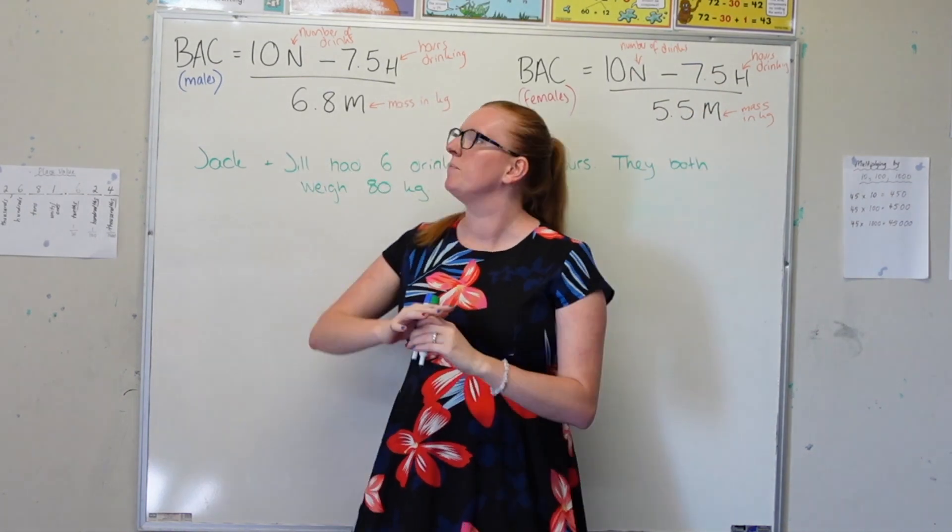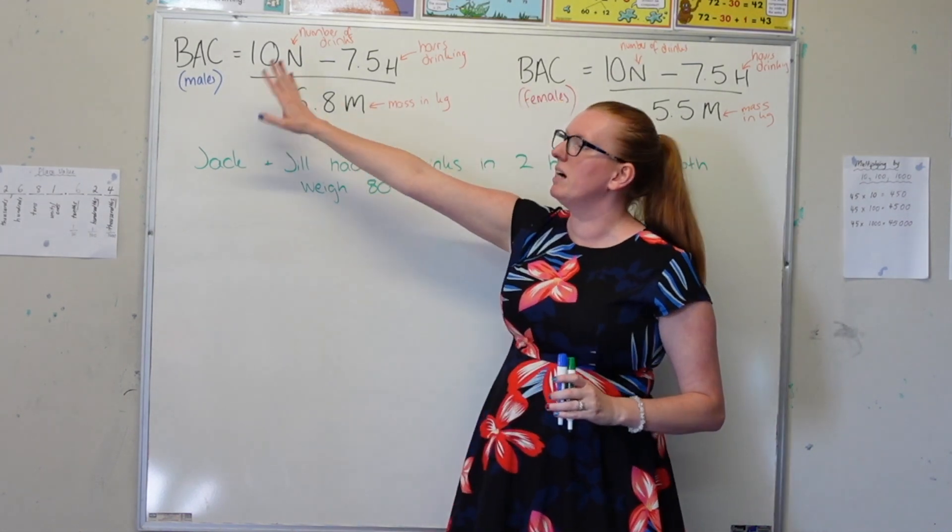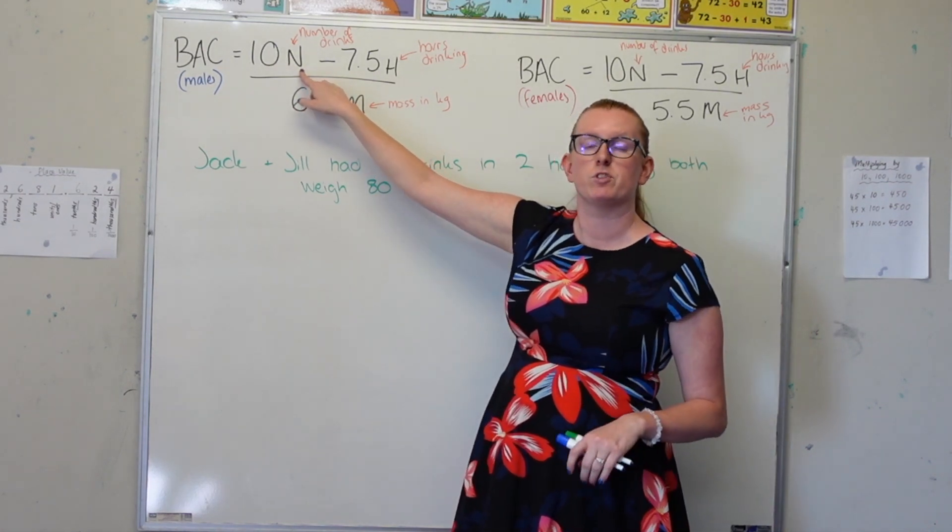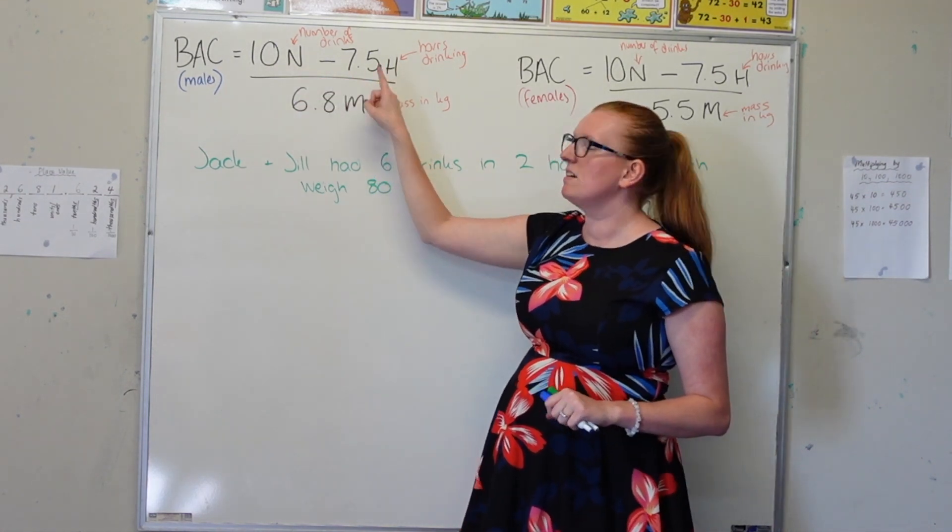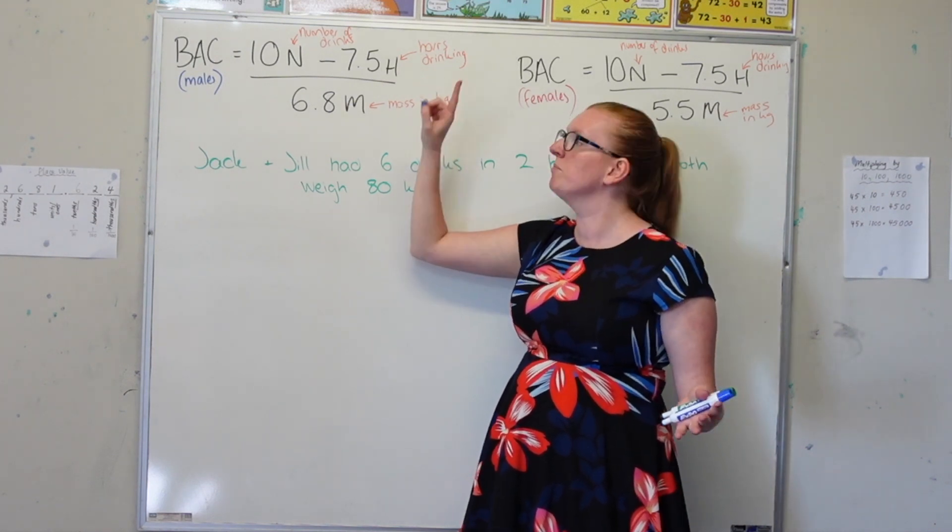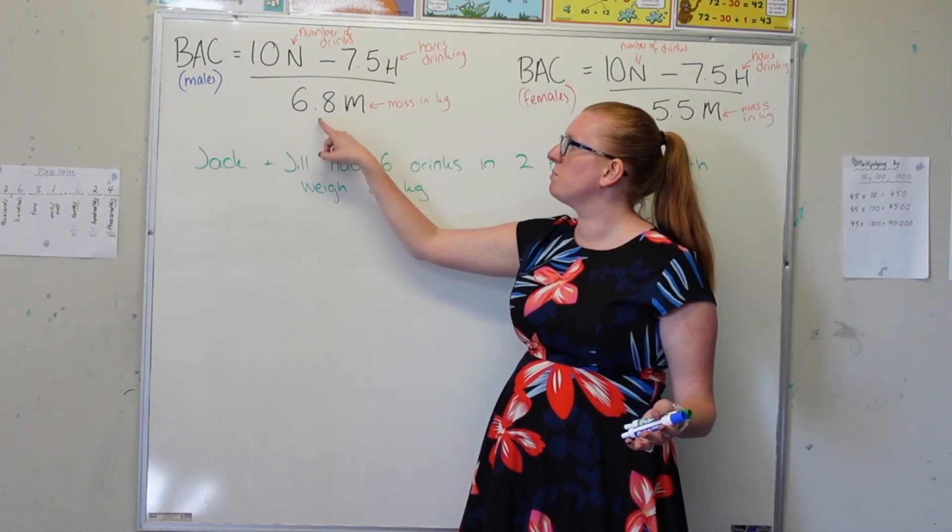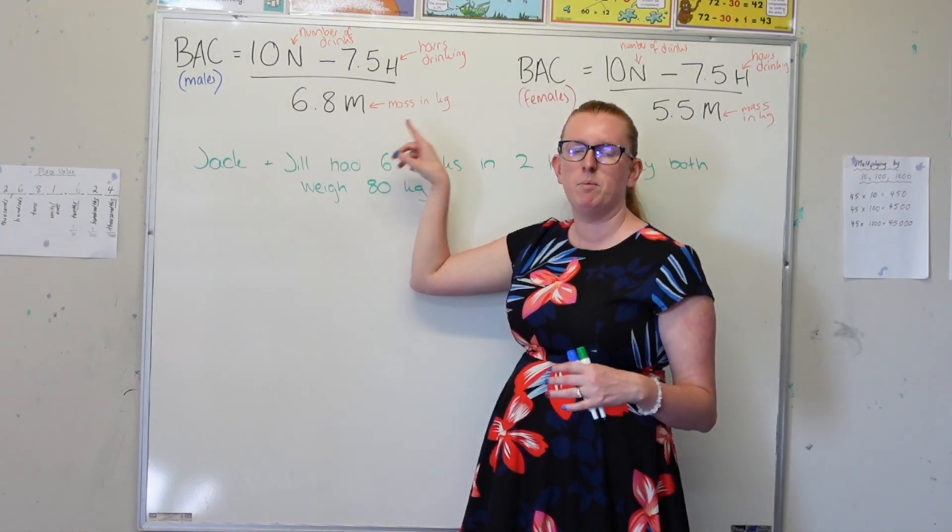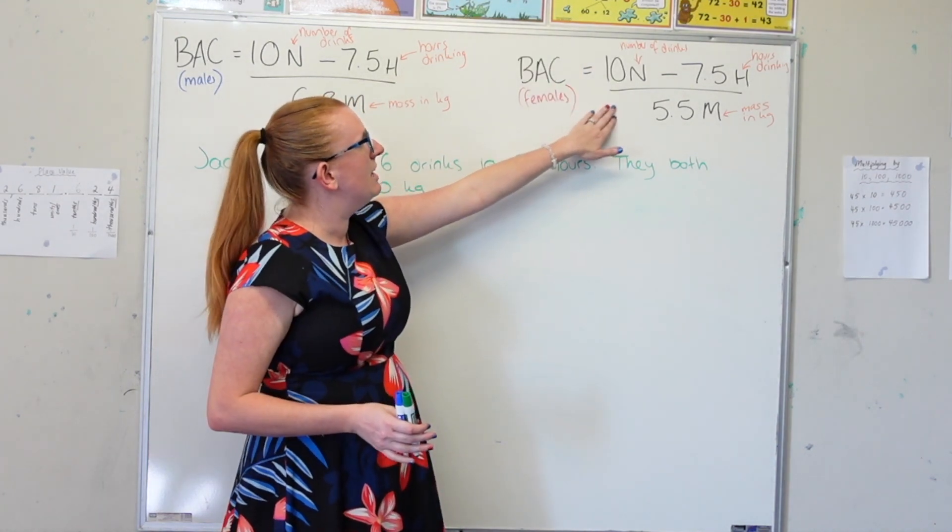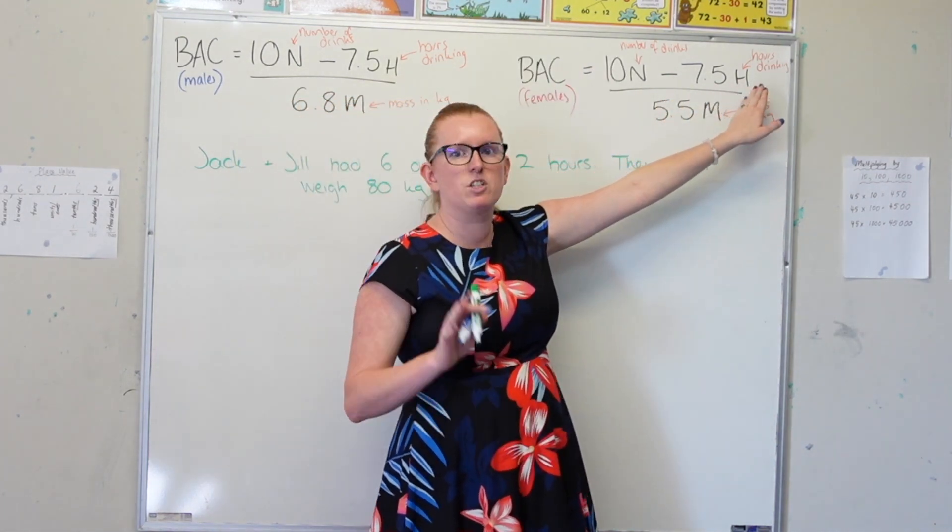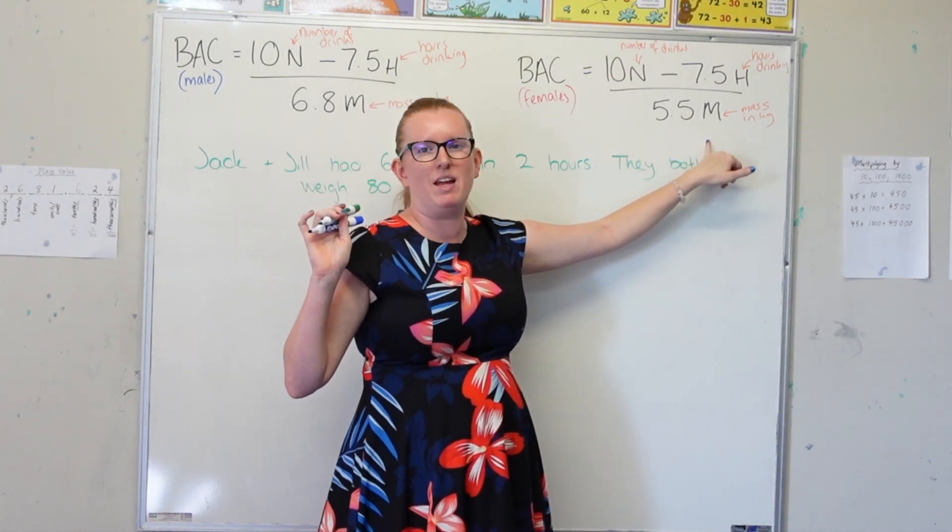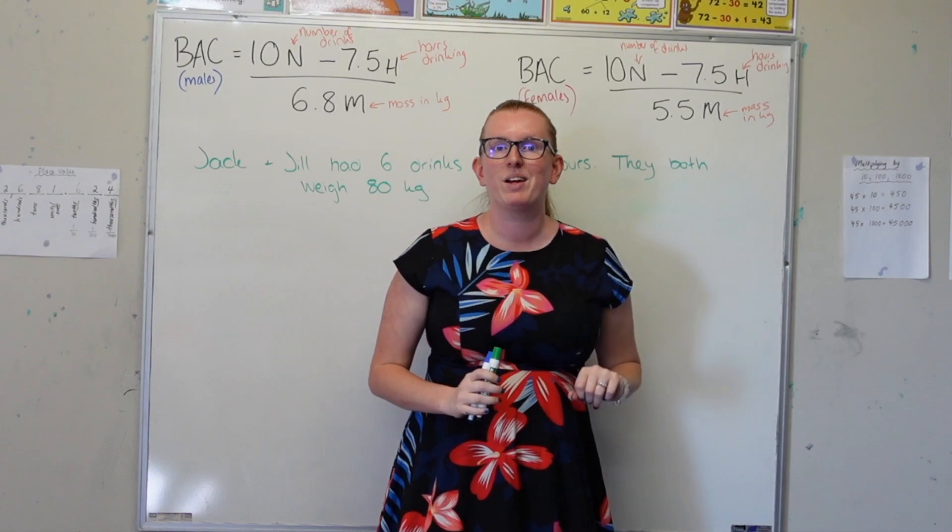So let's have a look at our formula. It tells us that blood alcohol concentration is equal to 10N, with N being the number of drinks that you've had, minus 7.5H, H being the number of hours that you've spent drinking, divided by 6.8M, M being your body mass in kilos. Whereas for females, it's 10N minus 7.5H, same, but then it's divided by 5.5M instead of 6.8M.